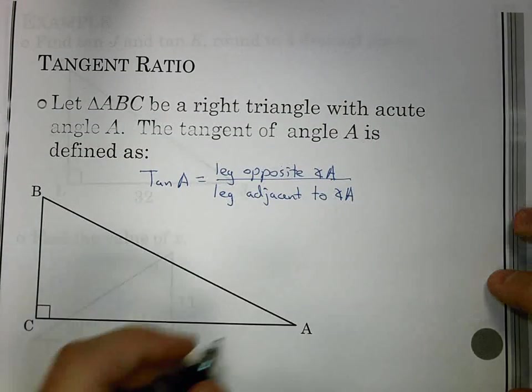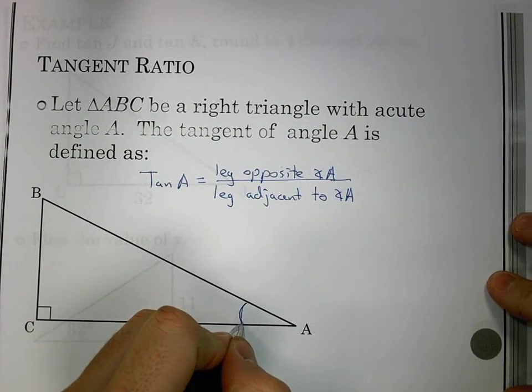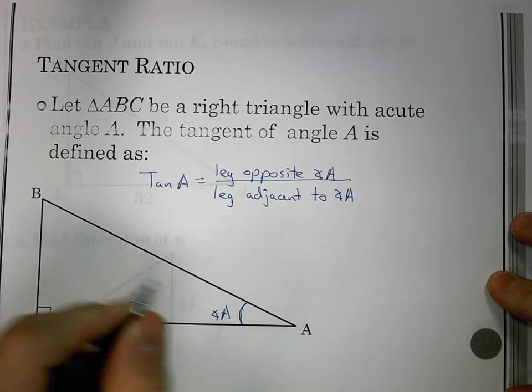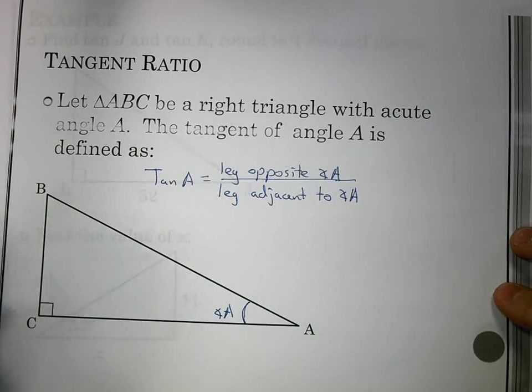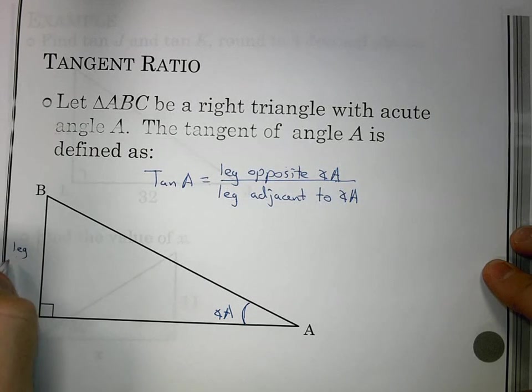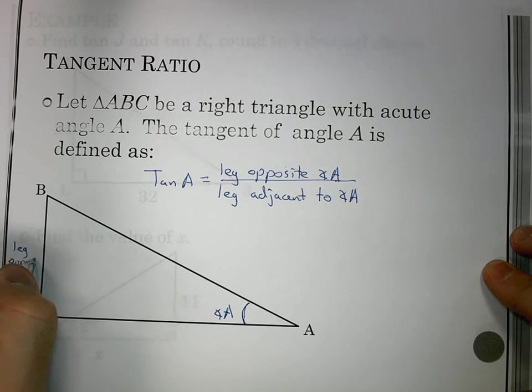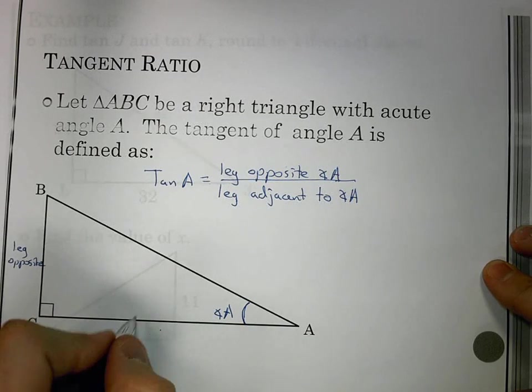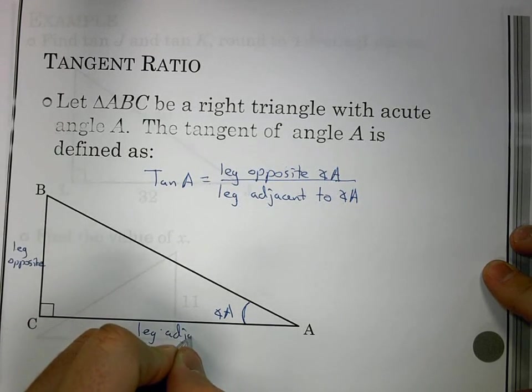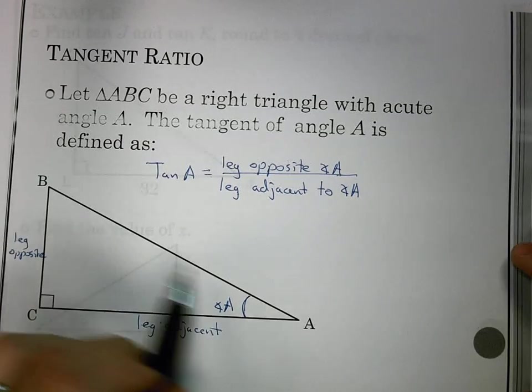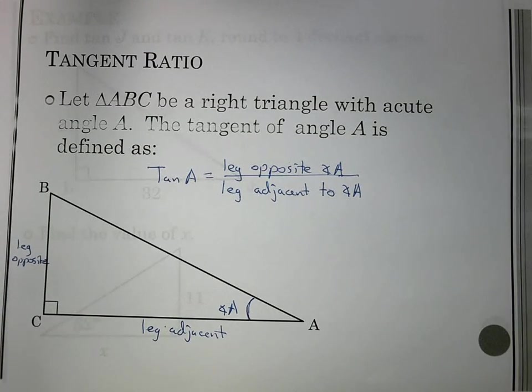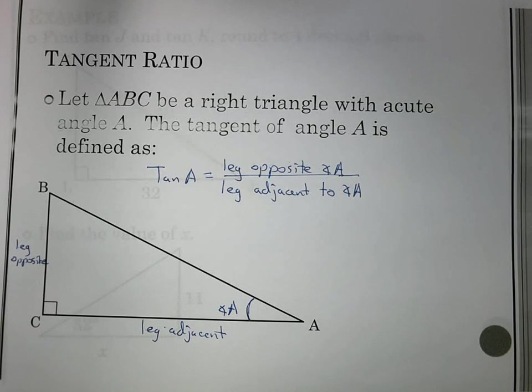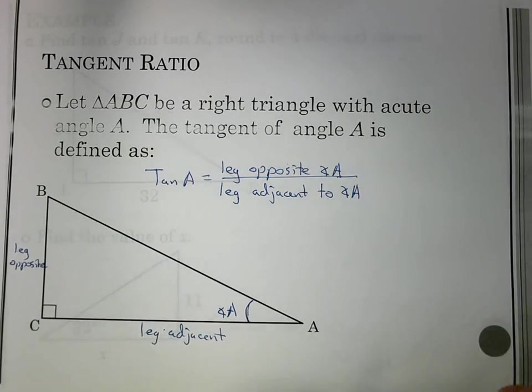to the leg adjacent to angle A. Let's look at what we actually have here. Angle A is what I'm looking at. When I talk about the leg opposite that, I'm talking about this leg over here. When I talk about the leg adjacent to it, it's the leg next to it, which would be right here. The side we're not using is the hypotenuse.